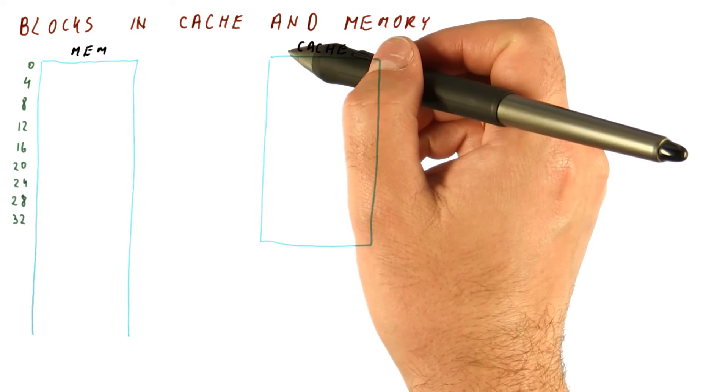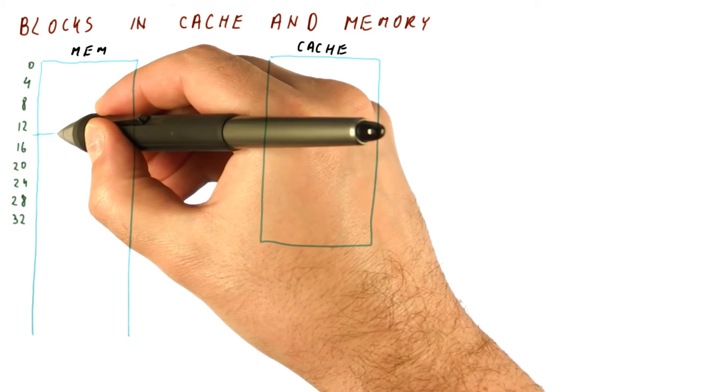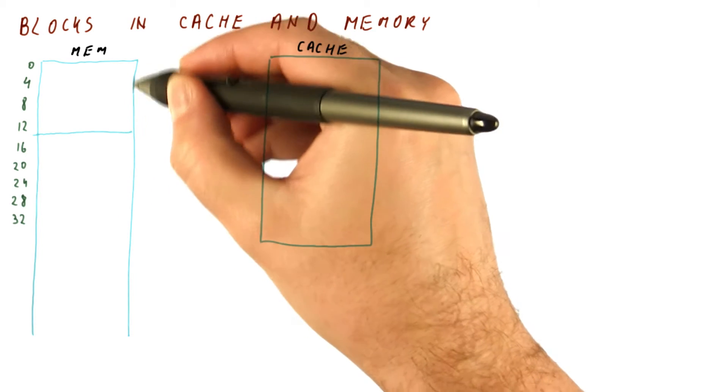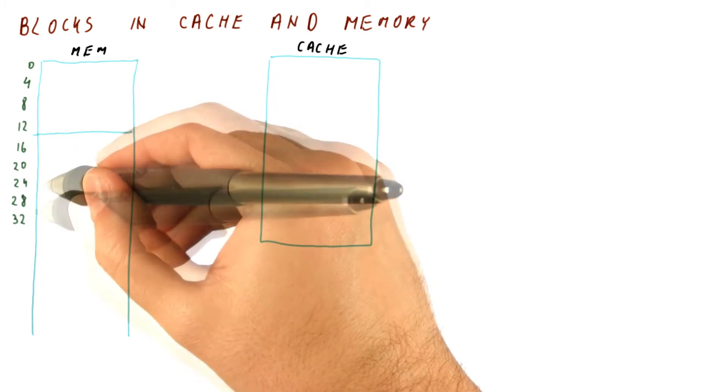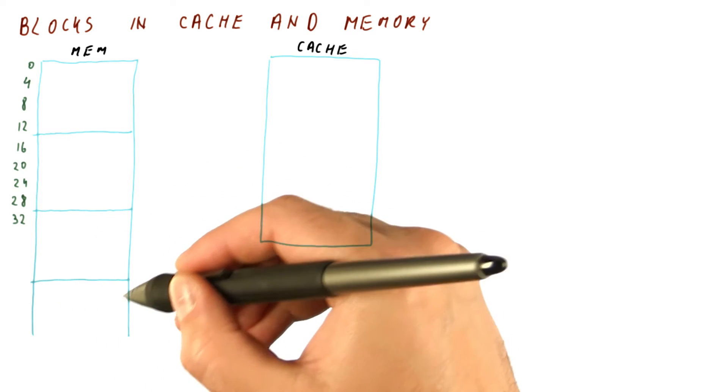Let's say that our block size is 16 bytes. That means that a possible block in memory is this. This would be the first block. This would be the second block. This would be the third block, and so on.